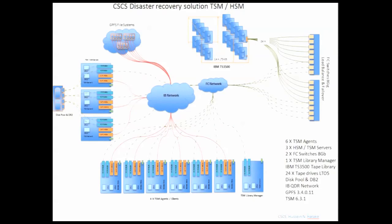Not all the features are completed yet, but we are working on it. We have six TSM agents — one of them just for managing the library, plus three servers that support all kinds of failover. At the top we have the file system where everything will be coming in. The IP network is implemented everywhere, so all data passes through IP.